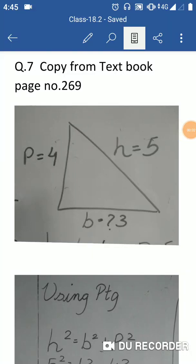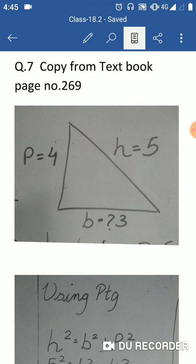Question number 7: if sin theta equals 4 by 5, find the value of 4 sin theta minus 5 cos theta divided by 6 sin theta plus 4 cos theta.